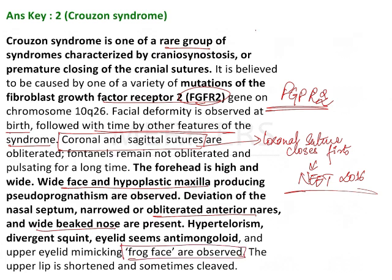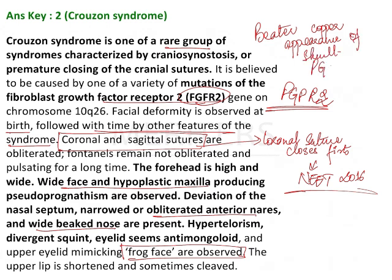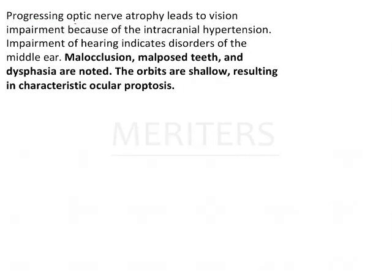One more thing to remember: on radiographs you will see a beaten copper appearance of the skull. This was a PGI question. The upper lip is shortened and is sometimes cleaved. Progressing optic atrophy leads to vision impairment because of intracranial hypertension. Impairment of hearing indicates disorders of the middle ear. Malocclusion, malposed teeth, and dysphagia are noted, meaning the patient will have difficulty in feeding.